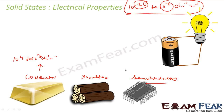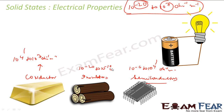For semiconductors, conductivity is a little less — 10 to the power minus 6 to 10 to the power 4 per ohm per meter. Insulators have even lower conductivity: 10 to the power minus 20 to 10 to the power minus 10 per ohm per meter. So solids have a huge range of electrical conductivity.